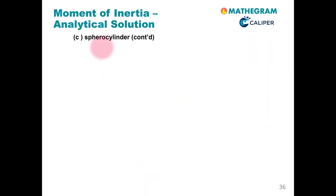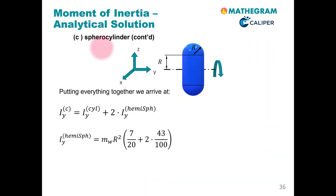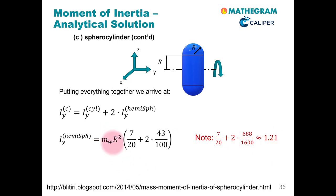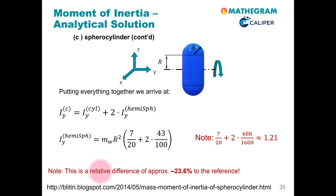We can now finalize our example by simply adding things up. We add to the moment of inertia of the cylindrical part 2 times that of the hemisphere, and we arrive at approximately 1.21 times the mass of the wooden stick multiplied by r squared. You can also consult the cited reference where the derivation is made for a more general situation. Note that the relative difference of this approximation is minus 23.6% compared to our reference.